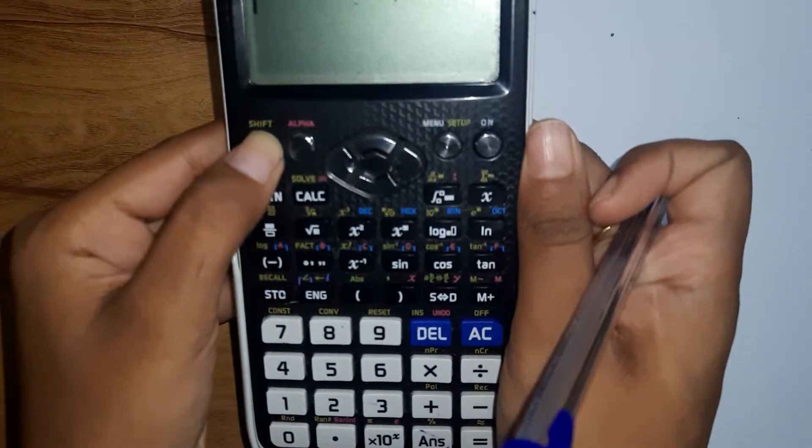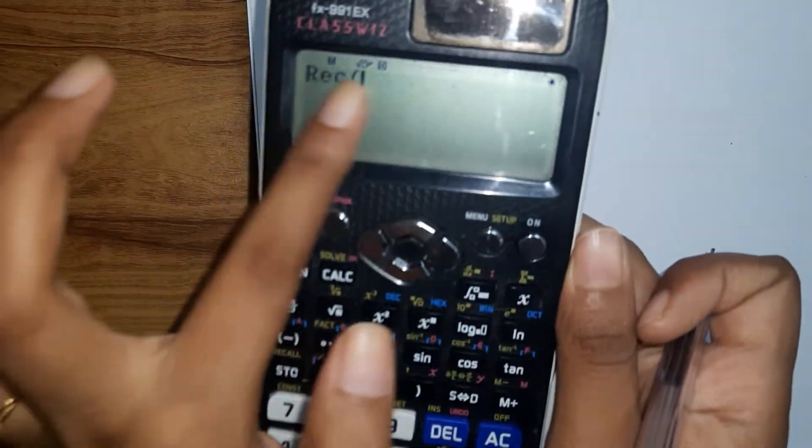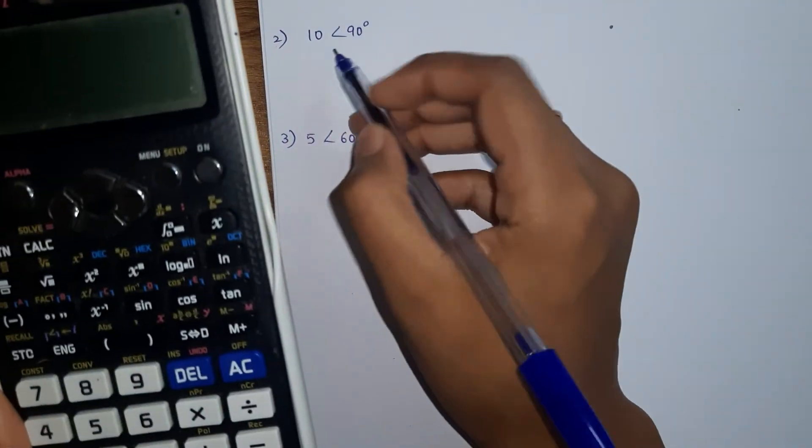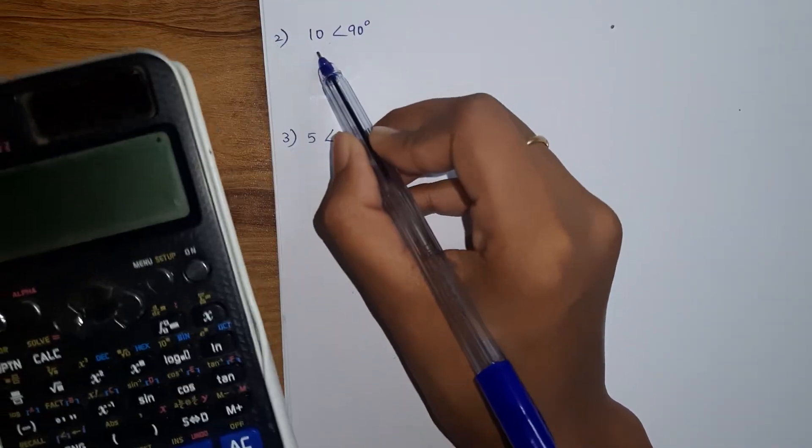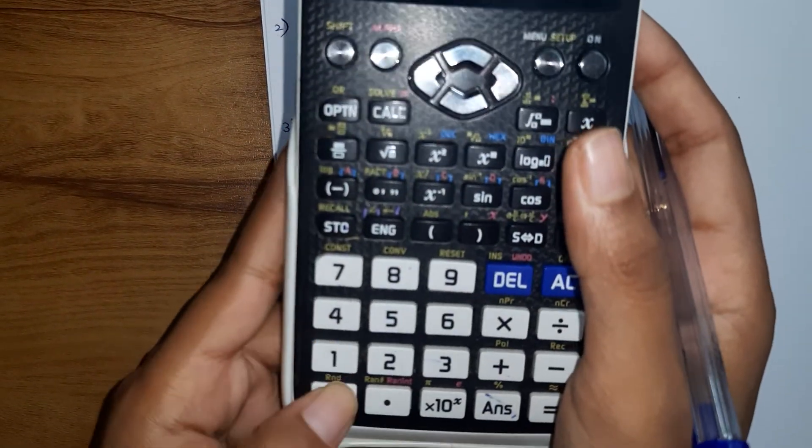Same, next thing also same we will do. Go to shift and rect, then we got the same here. See, then you will enter these numbers, that is 10 and 90.